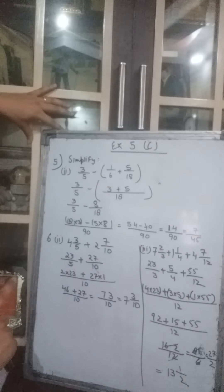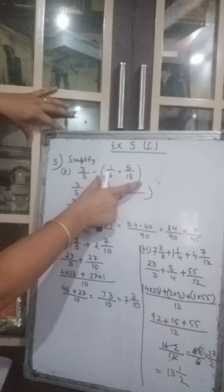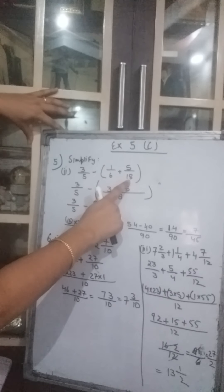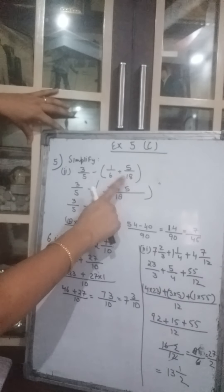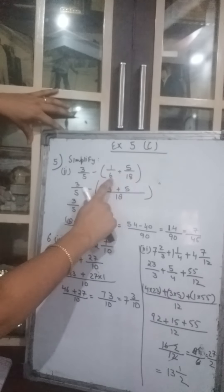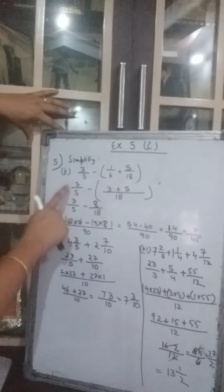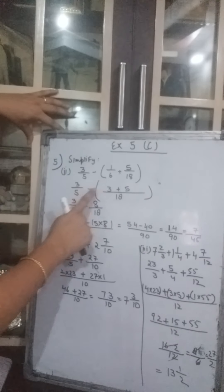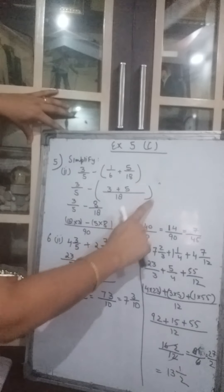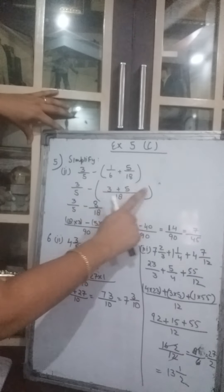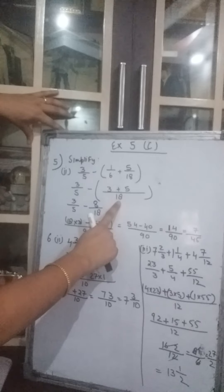According to BODMAS you have to solve the bracket first. So here in the bracket the denominators are different, so we will take the LCM. The LCM comes out to 18. So it is 3 upon 5 minus, and in the bracket we will write on the denominator it will come 18 because the LCM is 18.